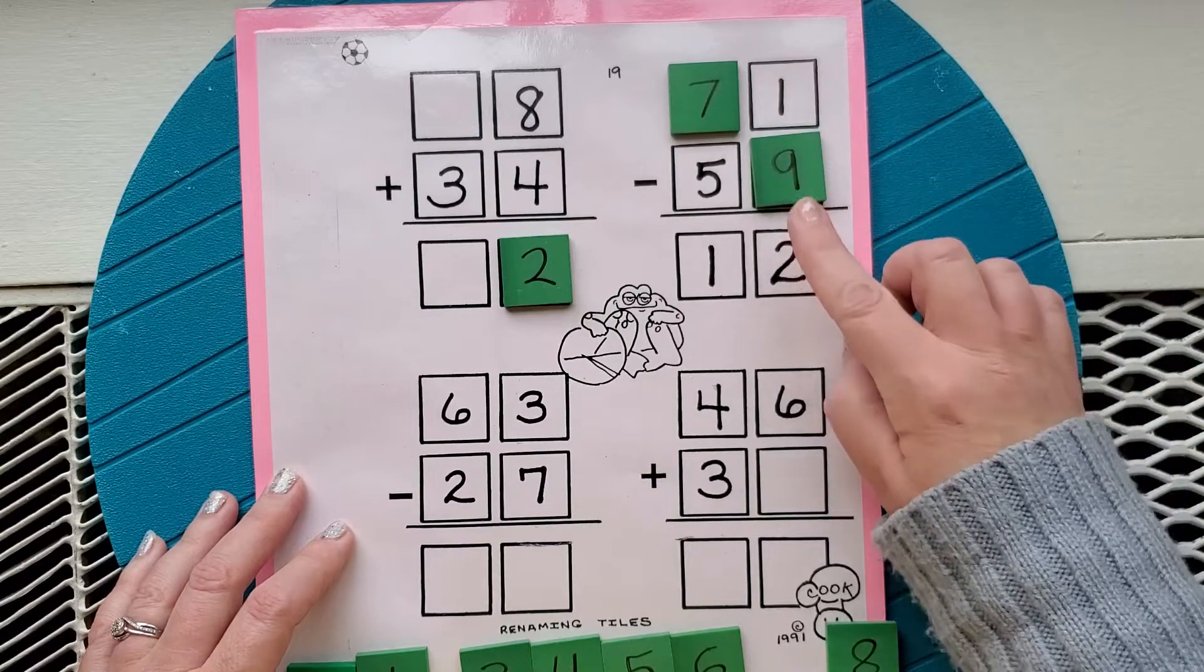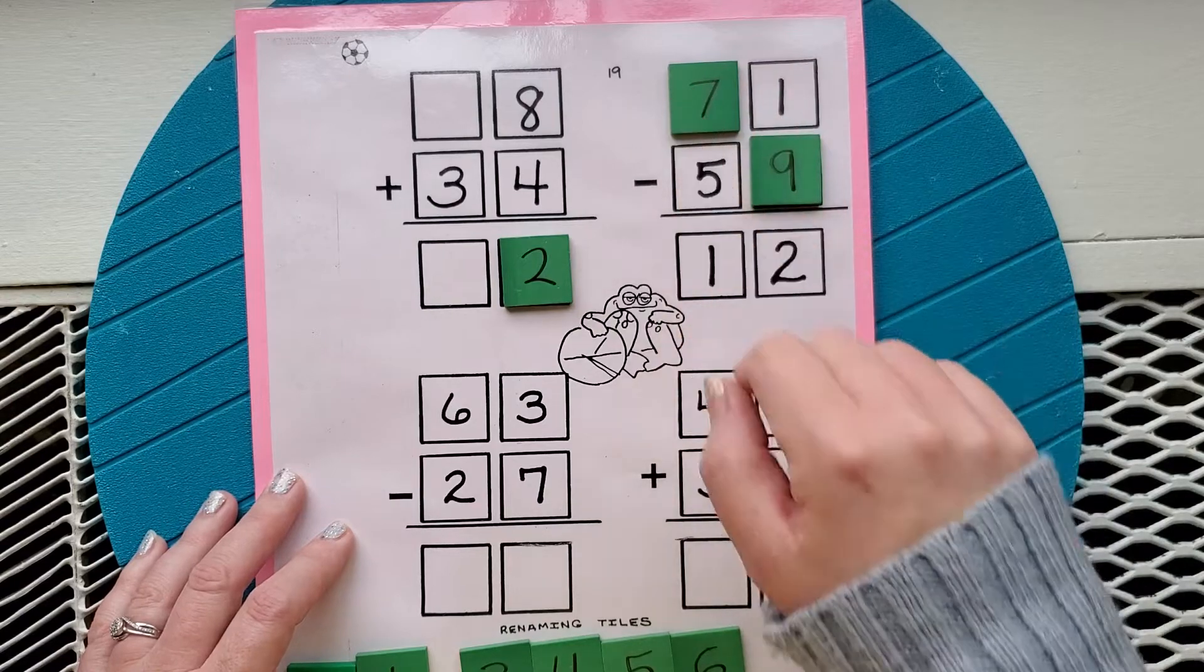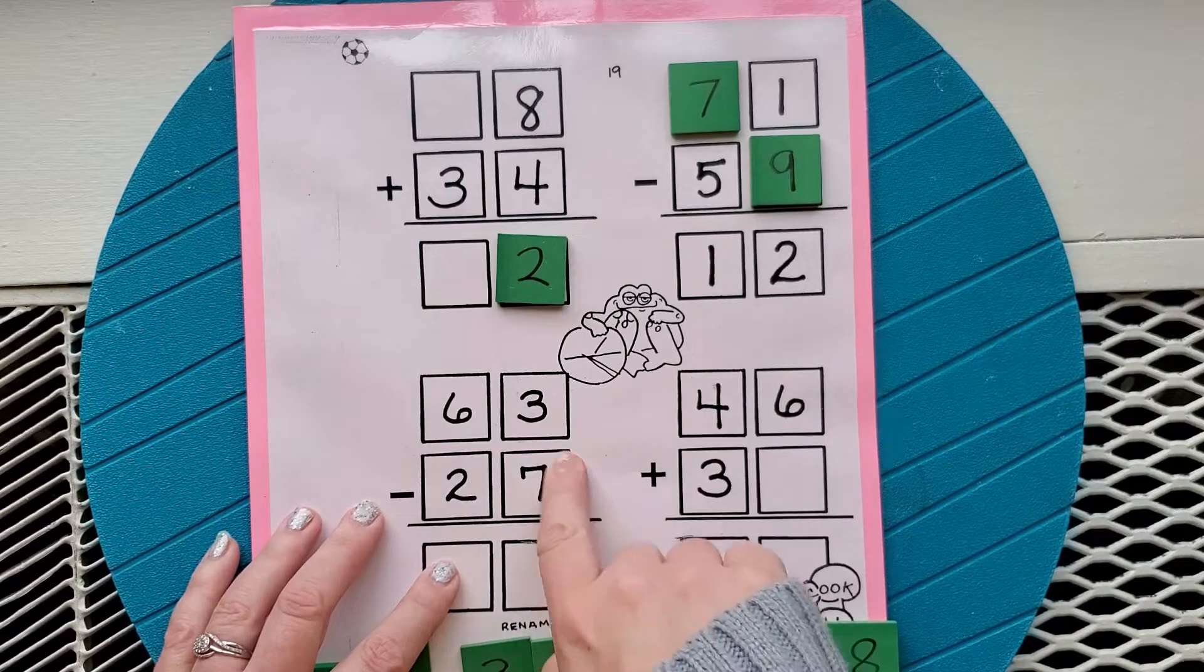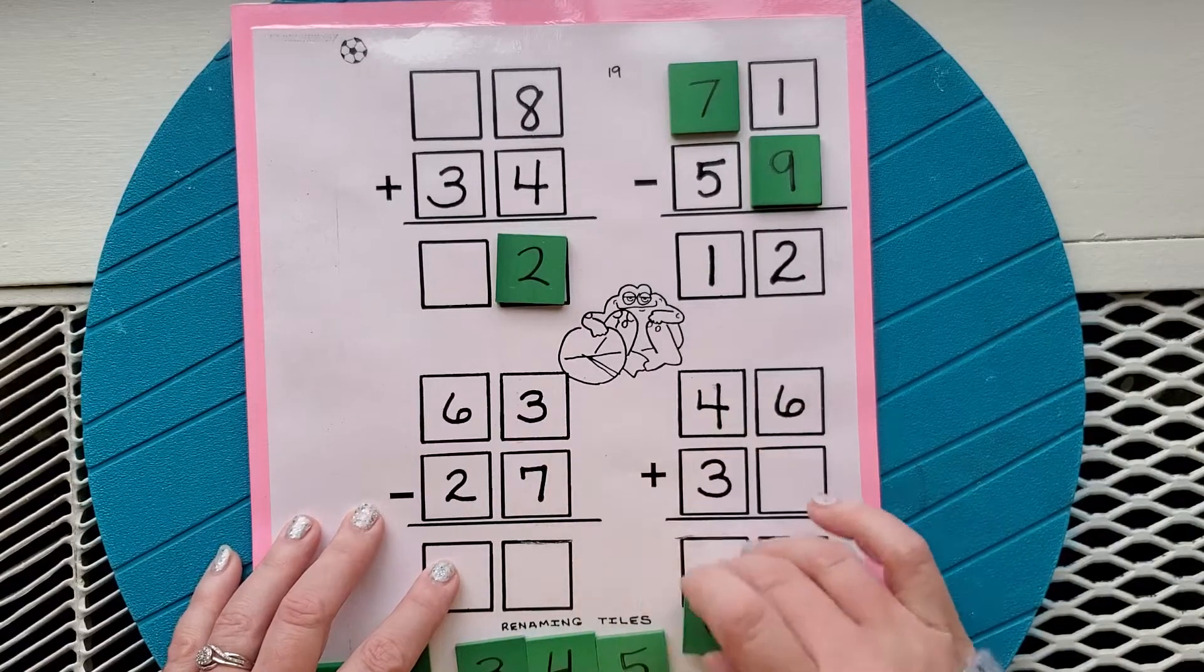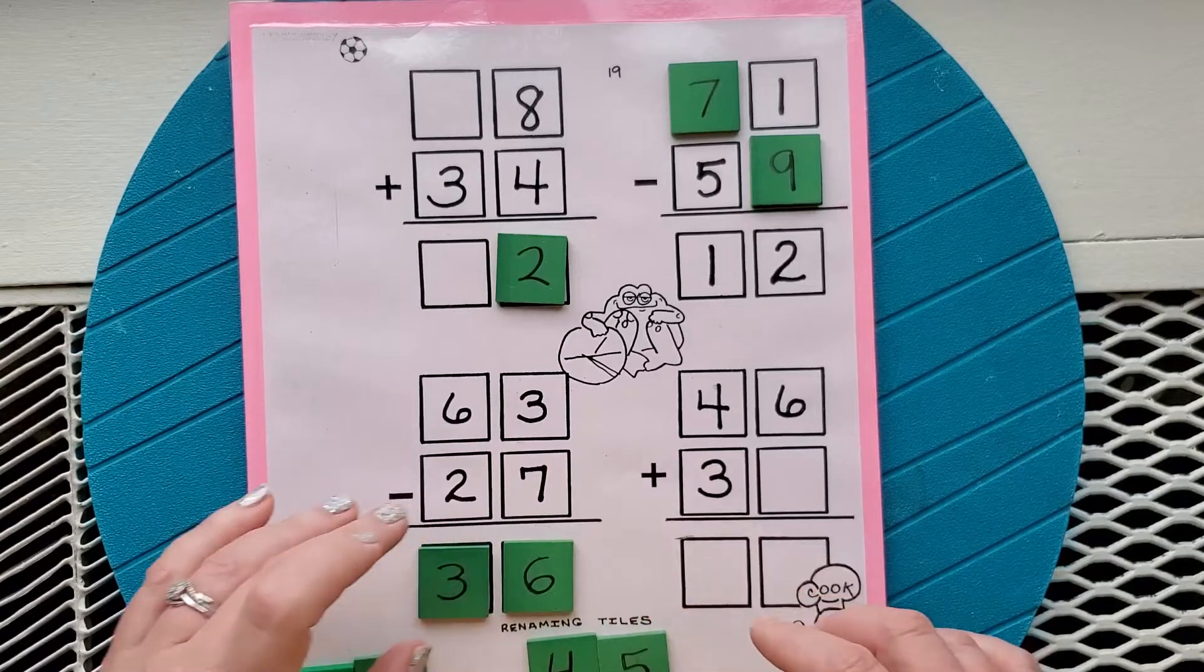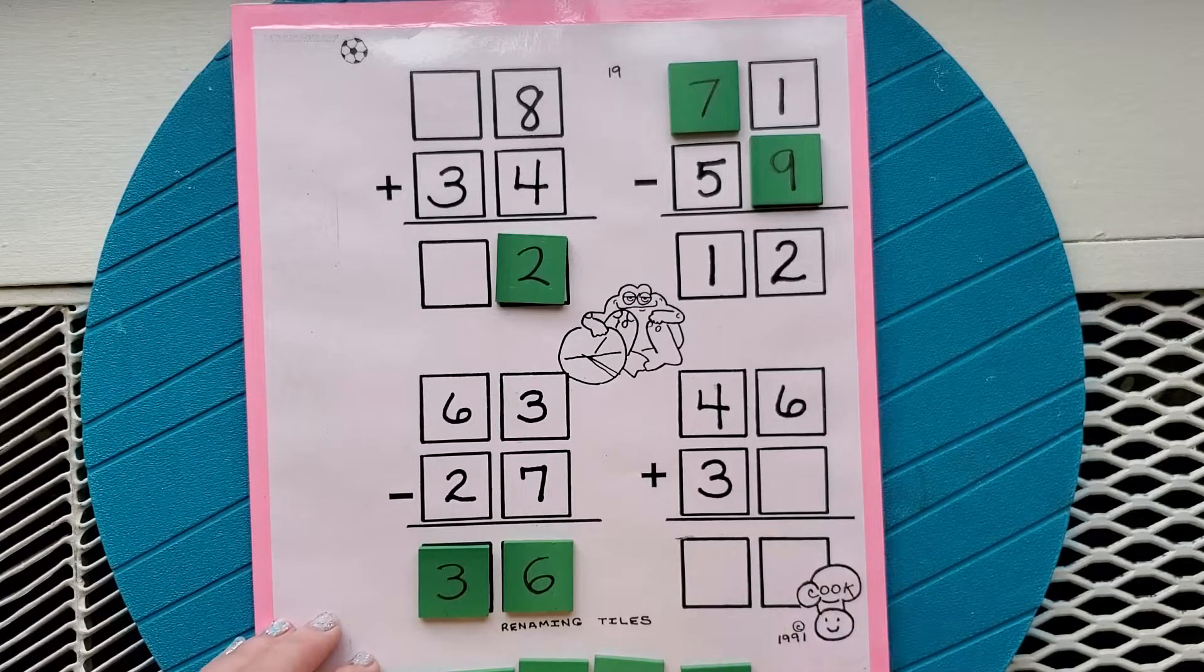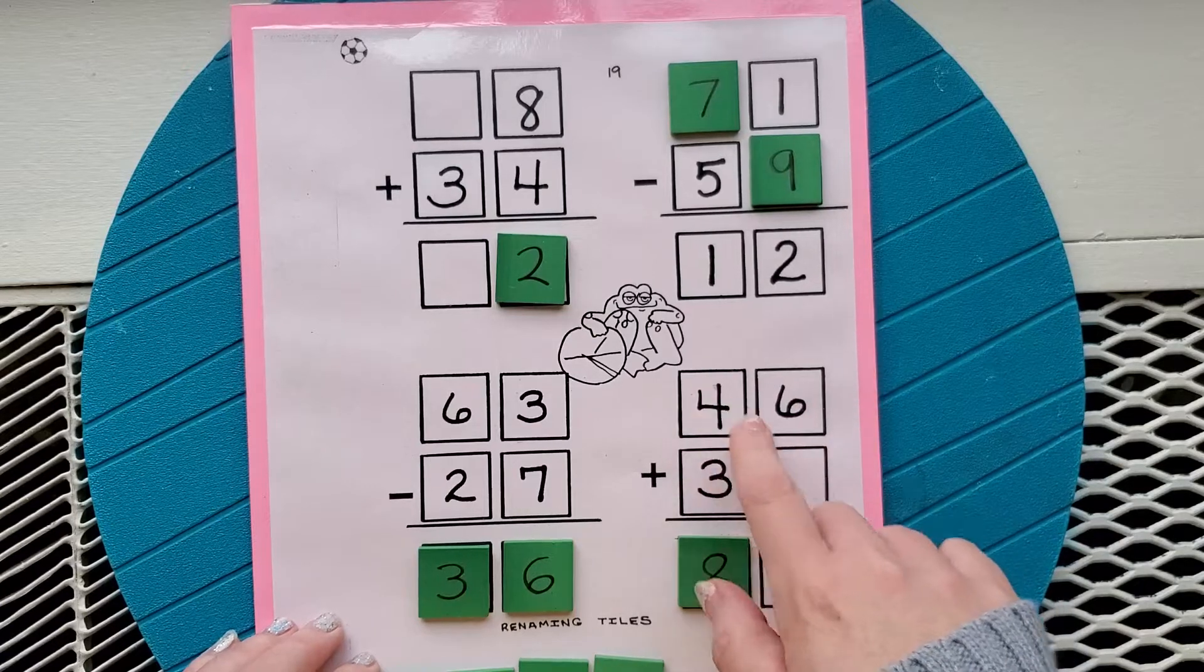11 minus 9 is 2, so this is 6 minus 5 is 1. And the reason why I said 6 is because, remember, we borrowed. So now we know we have all of these correct. And then 3 minus 7 is something. Well, we can't do that, so we need to borrow. So 13 minus 7 is 6, and that was 5 minus 2 is 3.